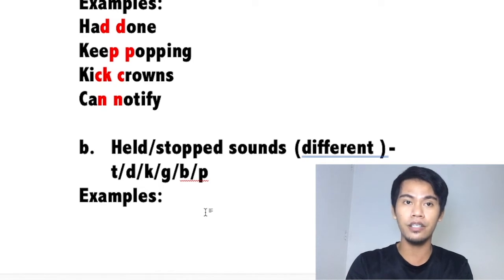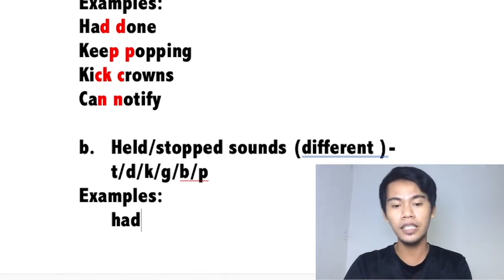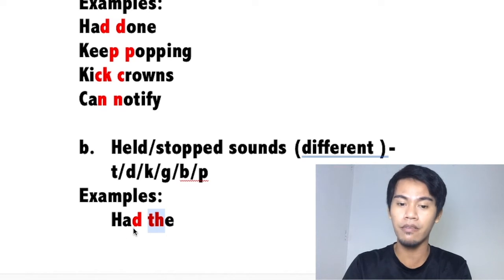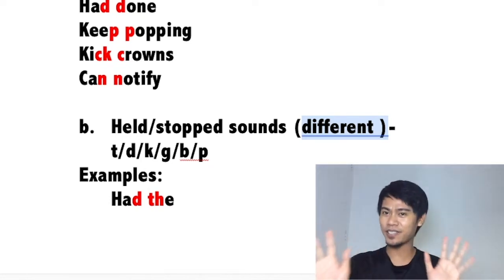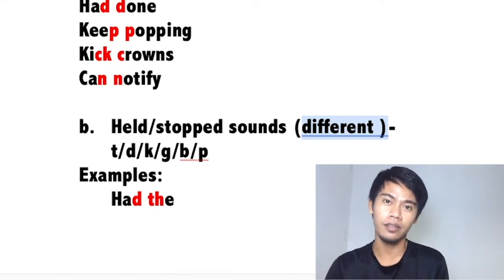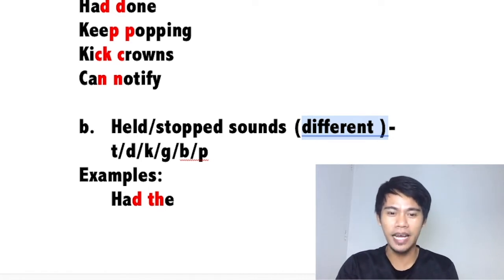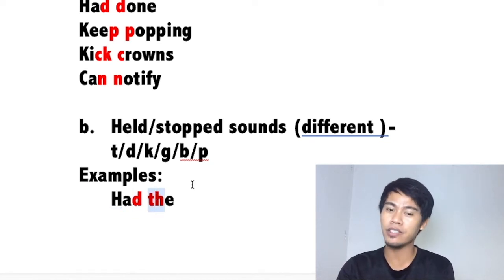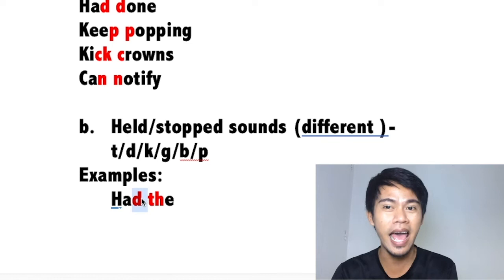Let's go back to the example we had: 'head the.' The last sound is a consonant and the first sound of the next word is also a consonant. Do they have the same sound? No — they have different sounds. So we check: is the first sound a T, D, K, G, B, or P? Yes — the D sound is in that list. Therefore, we do the held sound and say 'head the.'